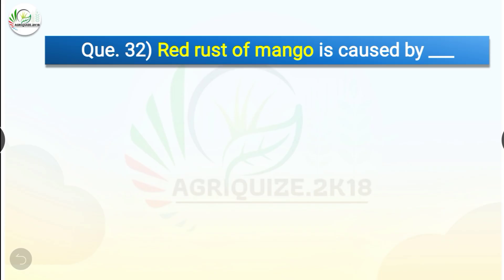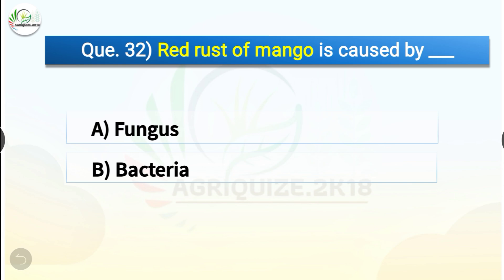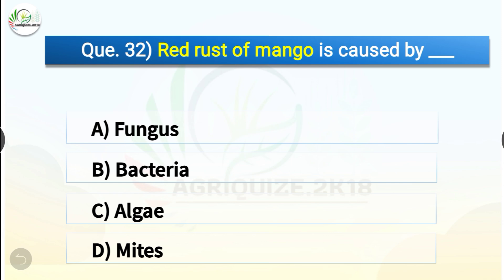Question number thirty-two: Red rust of mango is caused by dash. The options are fungus, bacteria, algae, or mites. The correct answer is option C, algae. Red rust disease in mango is caused by an alga observed in mango growing areas. The algal attack causes reduction in photosynthetic activity and defoliation of leaves, thereby lowering vitality of the host plant.